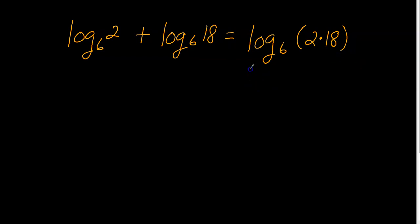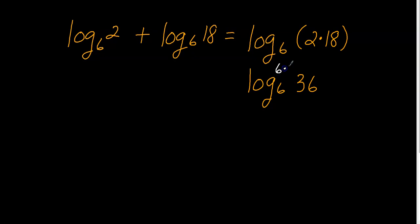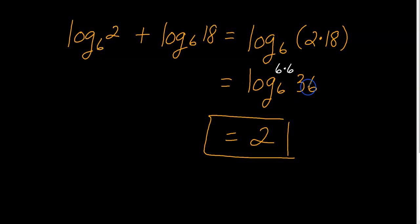Now I evaluate this: it becomes log base 6 of 36, since 2 times 18 is 36. What is log base 6 of 36? It means 6 to what power is 36, or how many times do I have to multiply 6 by itself to get to 36? Well, 6 times 6 is 36, so I multiply 6 by itself 2 times. Therefore, log base 6 of 36 equals 2, and that's the final answer.